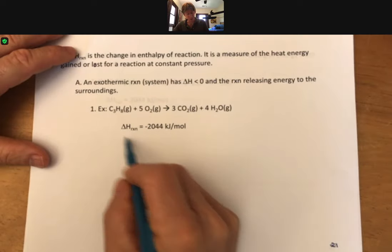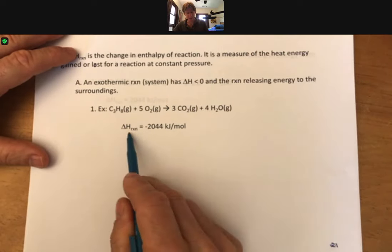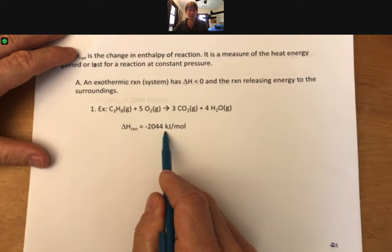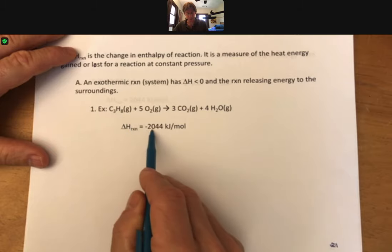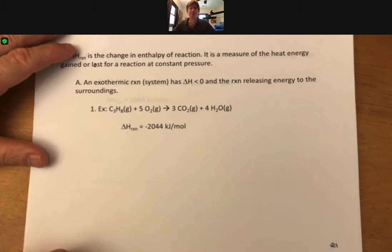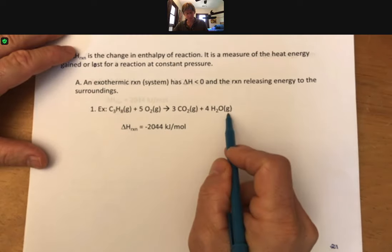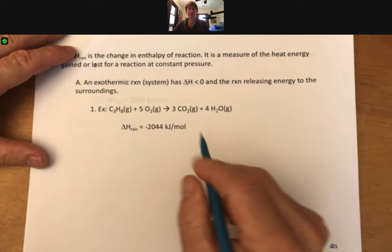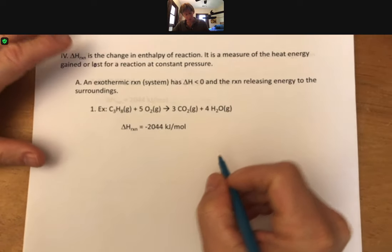Now this is oftentimes how you'll see a reaction. You'll see it's balanced and it has a delta H reaction value. That tells you that this delta H reaction value minus 2044 kilojoules per mole is associated with this reaction. Sometimes we also put it on the same line as well.